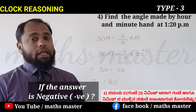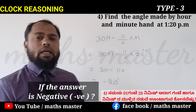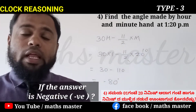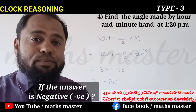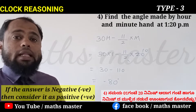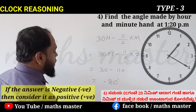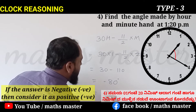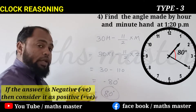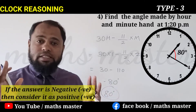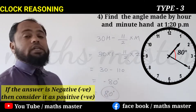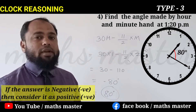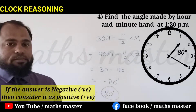If the answer is negative, then we have to consider it as a positive. So the answer is 80 degrees. There is no need to worry if the answer comes out negative — just consider it as a positive number. Now come to one more new problem.